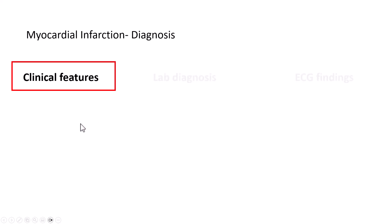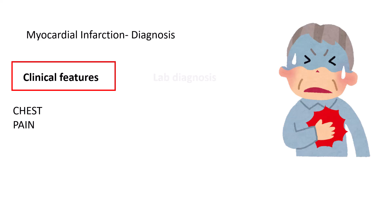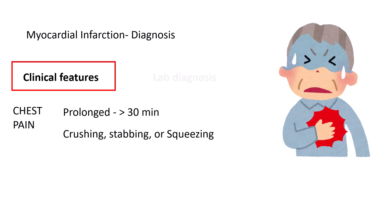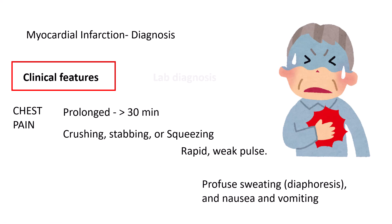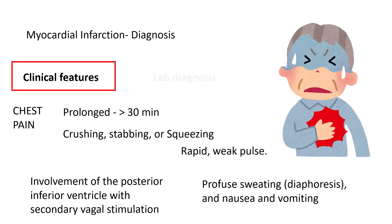The most important manifestation of myocardial infarction is chest pain. This chest pain is often prolonged, usually more than 30 minutes in duration. The typical location is substernal; it can be crushing, stabbing, or a squeezing type of chest pain, and it is often associated with a rapid and weak pulse. Some patients present with profuse sweating, referred to as diaphoresis, along with nausea and vomiting, because of involvement of the posterior inferior ventricle along with secondary vagal stimulation.